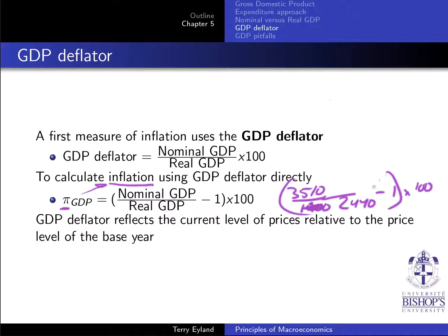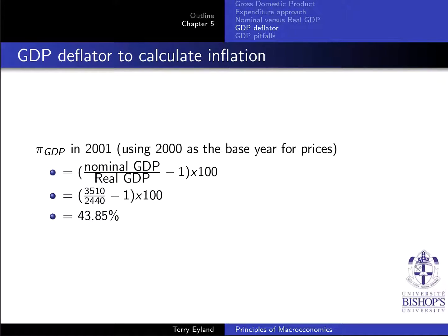As I mentioned before, since I had some goods going up by 20% and other goods going up by 50%, you should ask yourself — it has to be somewhere between those amounts. Because there are more goods at 50%, it might have a bigger impact, depending on the weights. So let's just see what it gives: 43.85%. So 43.85% is closer to the 50%, but it's still within that range.